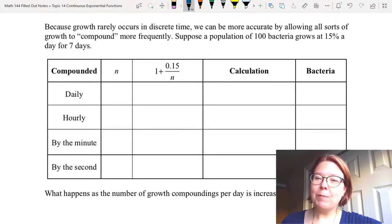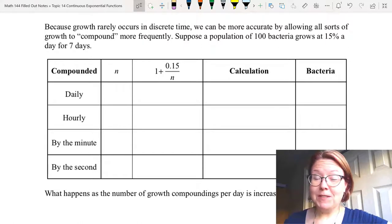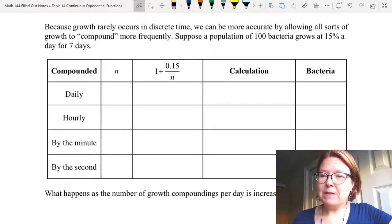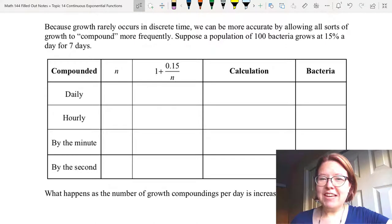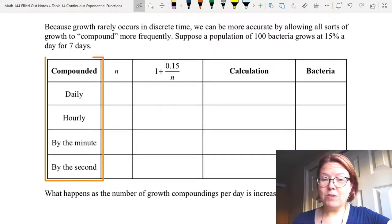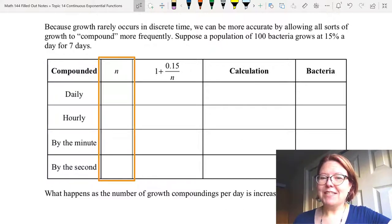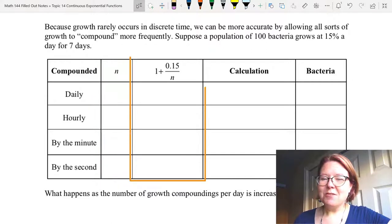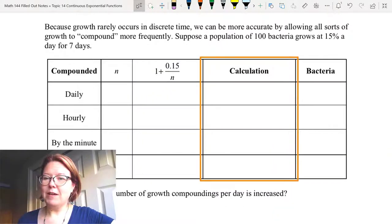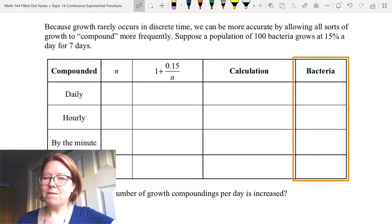For example, if we look at a population of a hundred bacteria, we know this population grows at 15% a day, and we want to see what happens after seven days. I've got a table with five columns in it. The first column is how we're compounding: daily, hourly, by the minute, and by the second. The second column is the n value, the number of compoundings. The third column is going to be 1 + 0.15/n, which gives us the growth factor. Then we'll do our calculation in the fourth column and count how many bacteria we have in the fifth column.